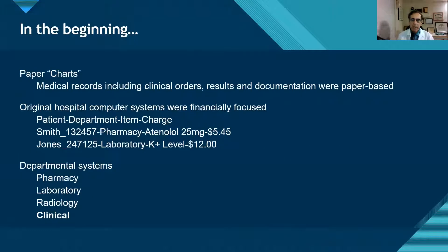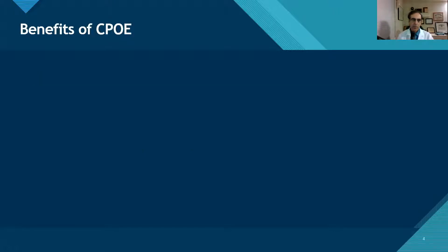Back at the beginning we had paper charts, and then we moved to these financially oriented systems for charging for different services. Then we saw the advent of departmental systems, and then of course we went to the clinical realm, and this is where we started having these all-inclusive integrated electronic health records. And once we have the EHR in place, then we can do things such as CPOE.